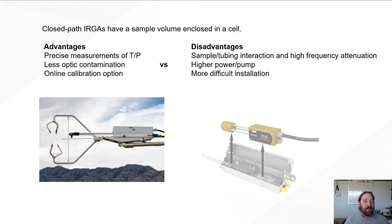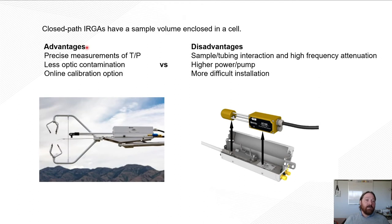So some advantages, or I'm sorry, so for the geometric design, the closed path Irgason has a sample cell, or a sample volume enclosed in a cell. In this case, it's within this clam shell. So in here is the sample cell right here, and we have a gas analyzer that goes on either side of that sample cell. So the air sample is brought in through our vortex intake, which filters the air, passed down this tube, and then enters into the sample cell, where the beam of light from our gas analyzer is shining.